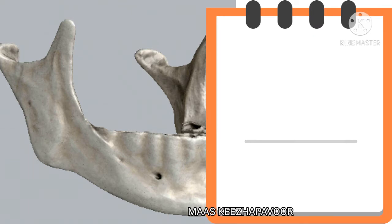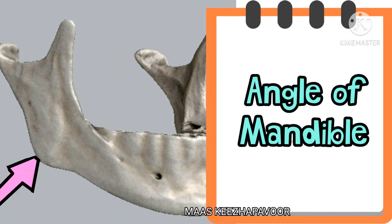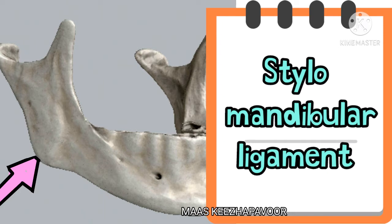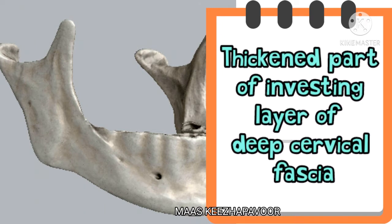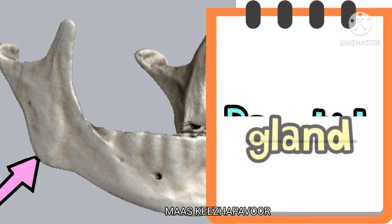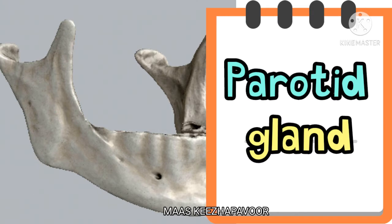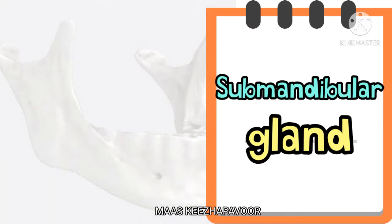The marked area is the angle of mandible. The stylomandibular ligament is attached here. This ligament is considered as the thickened part of the investing layer of deep cervical fascia. The parotid gland and submandibular gland are separated by the stylomandibular ligament.